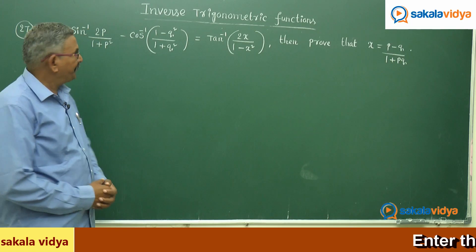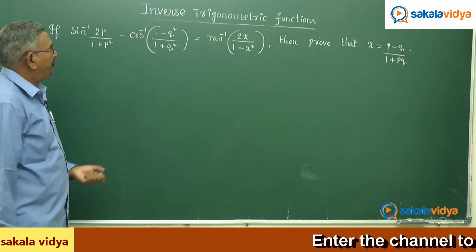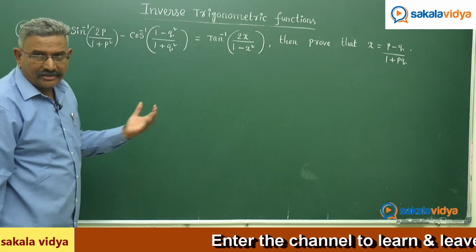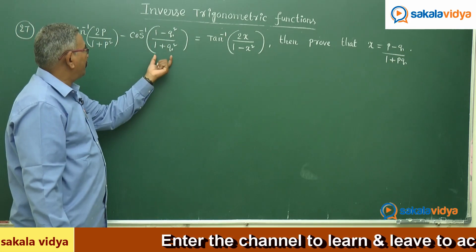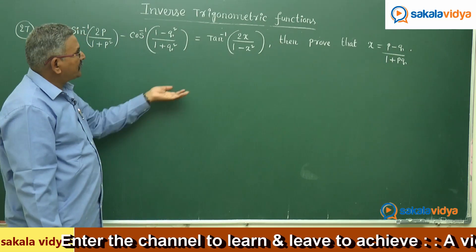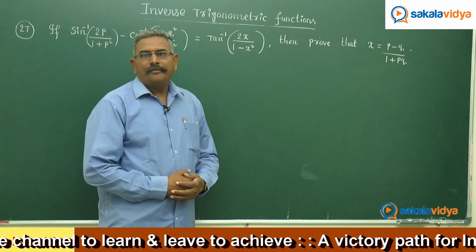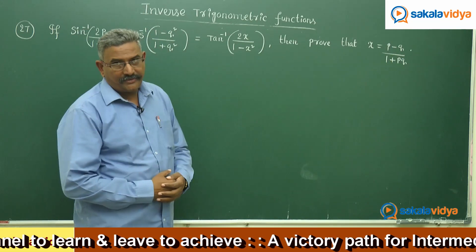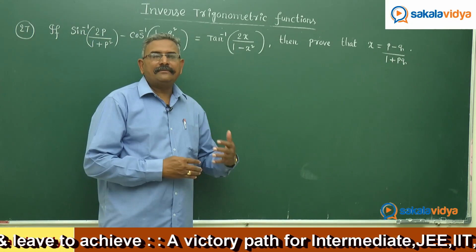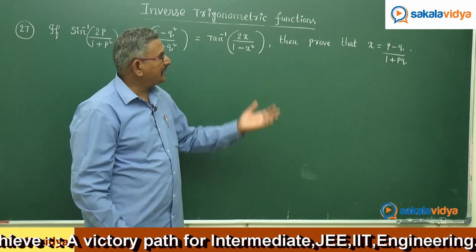Let us move to the next problem. If sin⁻¹(2p/(1+p²)) minus cos⁻¹((1-q²)/(1+q²)) is equal to tan⁻¹(2x/(1-x²)), then prove that x equals (p-q)/(1+pq). That means we have to express the value of x in terms of p and q.